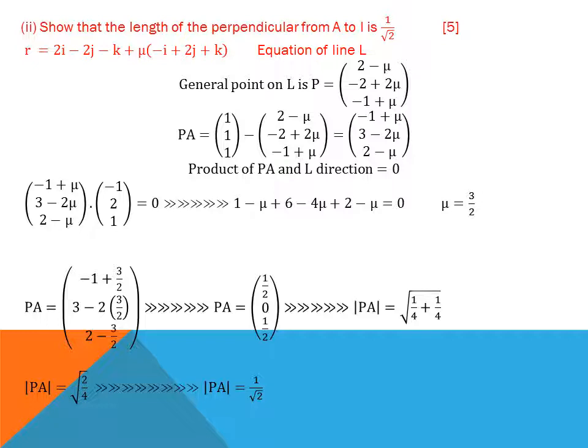Substituting μ = 3/2 into point P and computing PA gives PA = (1/2, 0, 1/2). Taking the magnitude: |PA| = √((1/2)² + 0² + (1/2)²) = √(1/4 + 0 + 1/4) = √(1/2) = 1/√2. This proves the perpendicular distance from A to L equals 1/√2.